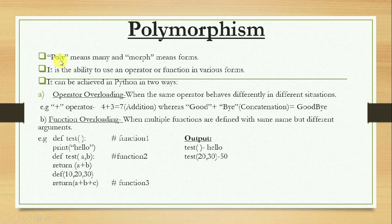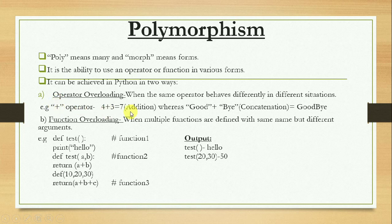Polymorphism: poly means many and morph means forms, so it is the ability to use an operator or function in various forms. It can be achieved in Python in two ways: operator overloading and function overloading. Operator overloading refers to when the same operator behaves differently in different situations. For example, the plus operator used with two integers gives their sum — four plus three gives seven. But used with two strings, 'good' plus 'bye' concatenates them to give 'goodbye'. The same operator gives different results in different situations.